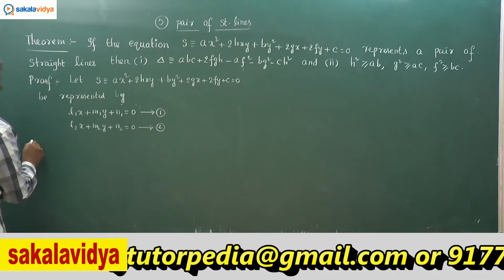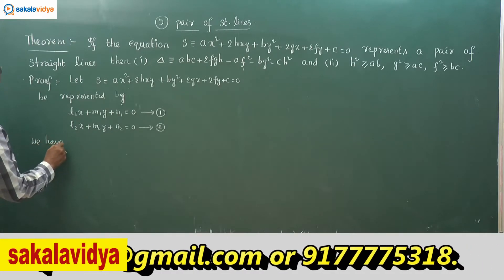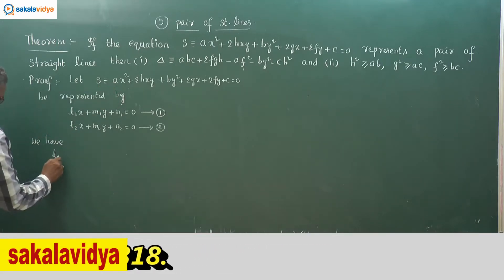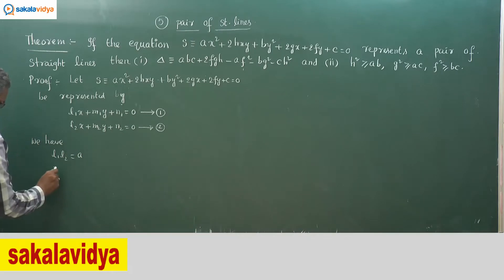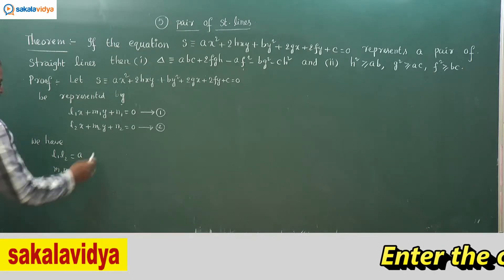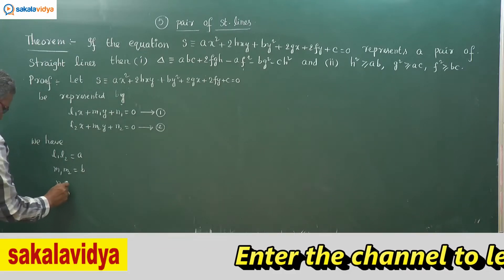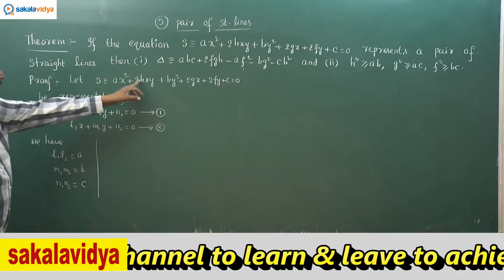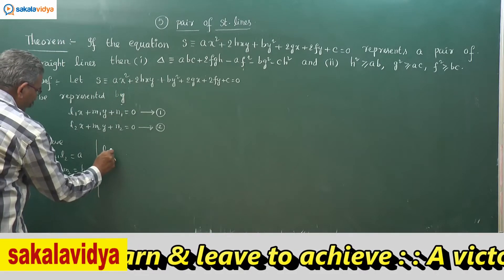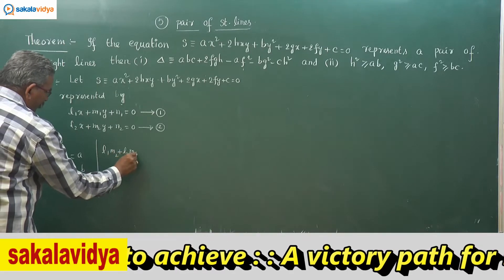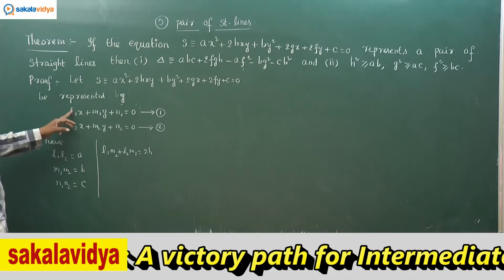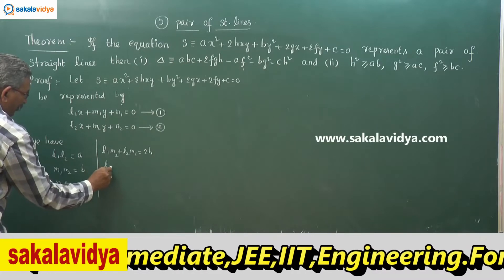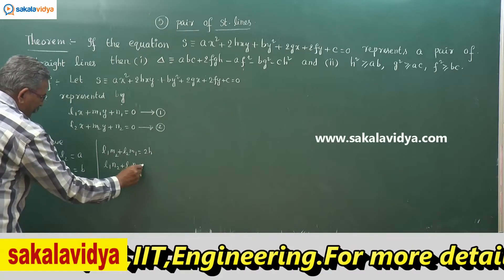From expanding the product of the two lines, we identify: l₁l₂ = a (the x² coefficient), m₁m₂ = b, n₁n₂ = c. Also, l₁m₂ + l₂m₁ = 2h, and l₁n₂ + l₂n₁ = 2g.